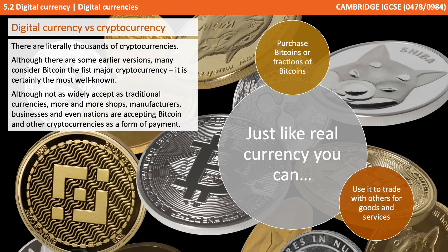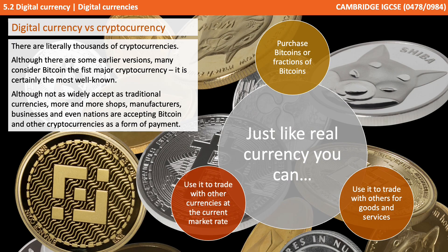There are literally thousands of cryptocurrencies. Although there are some earlier versions, many consider Bitcoin the first major cryptocurrency, and it's certainly the most well known. Although not as widely accepted as traditional currencies, more and more shops, manufacturers, businesses, and even nations are accepting Bitcoin and other cryptocurrencies as a form of payment.